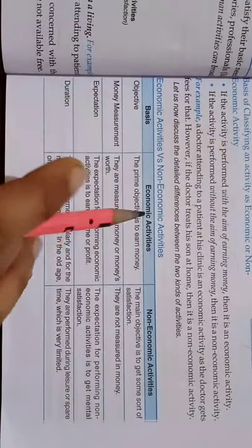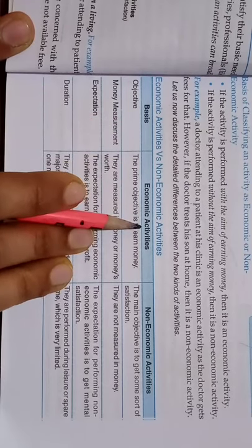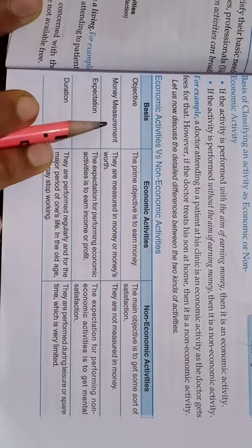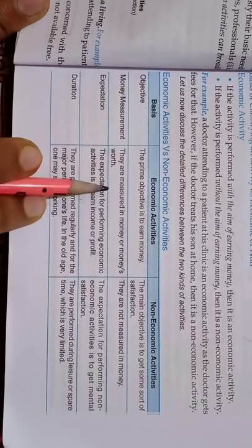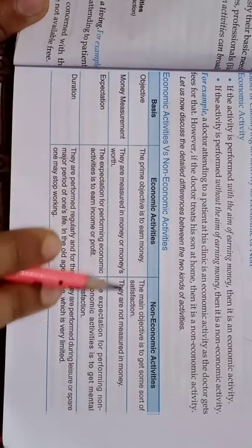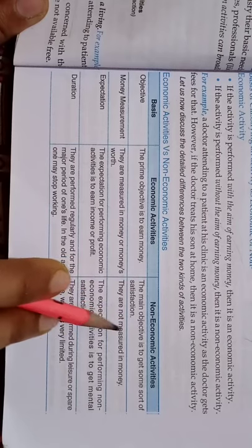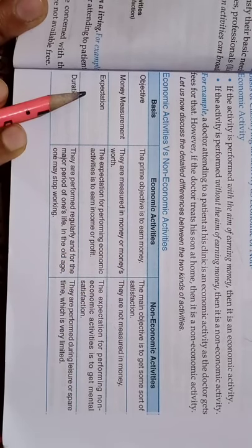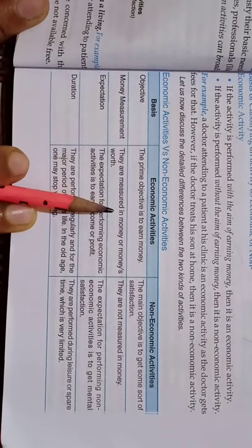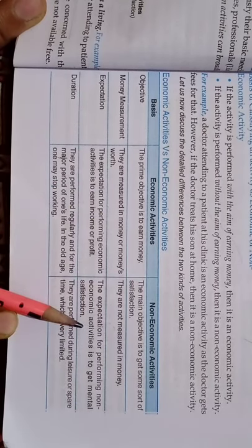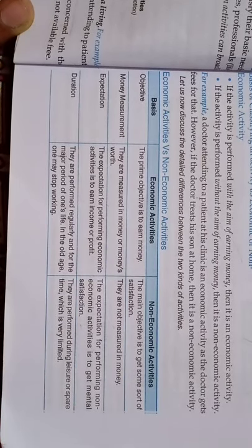The points of difference between economic and non-economic activities: First is objective — to earn money versus to get satisfaction. Second is money measurement — economic activities can be measured in money because we perform them for earning money, so we can measure the outcome. But non-economic activities are performed for satisfaction which cannot be measured. Third is expectation — in economic activities the expectation is to earn money, whereas in non-economic activities the expectation is to serve society or to get mental peace.